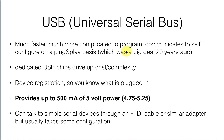The Universal Serial Bus is much faster, and it's much more complicated to program. It communicates with your computer to self-configure on a plug-and-play basis, which was a big deal 20 years ago but not so much now. Dedicated USB chips to handle that protocol drive up the cost and complexity of devices — which might be why you'd use plain RS-232 serial rather than USB. One cool thing about a USB port is it provides, under the specification, up to 500 milliamps of 5-volt power, so you can run your devices off the serial plug.